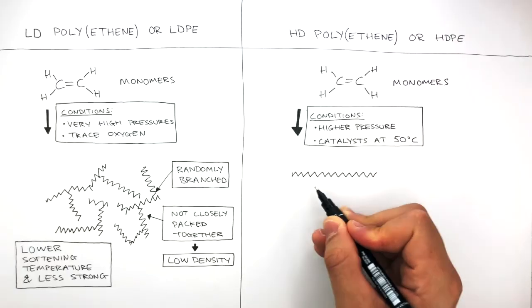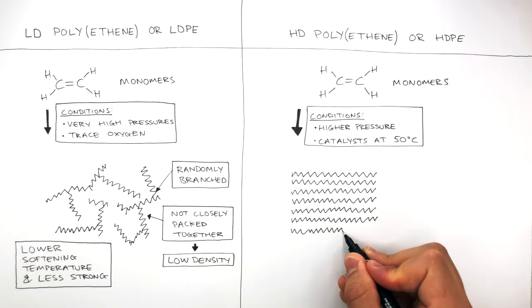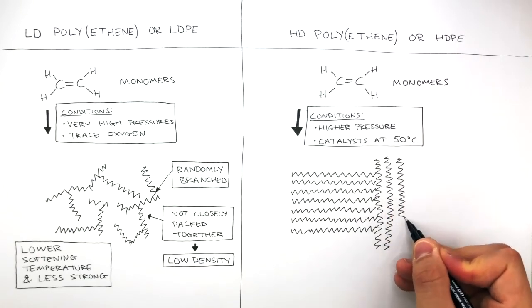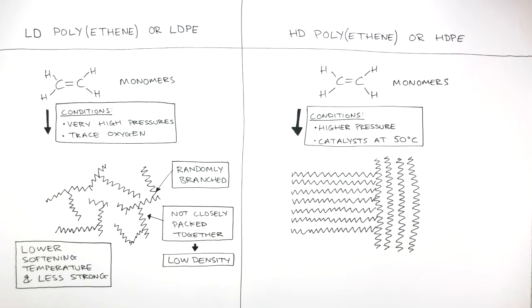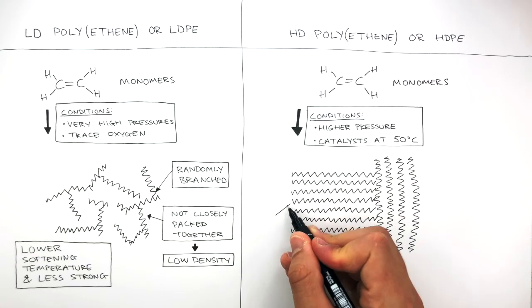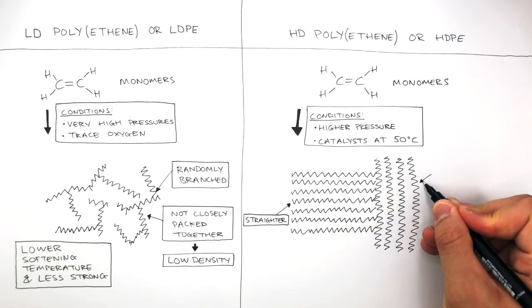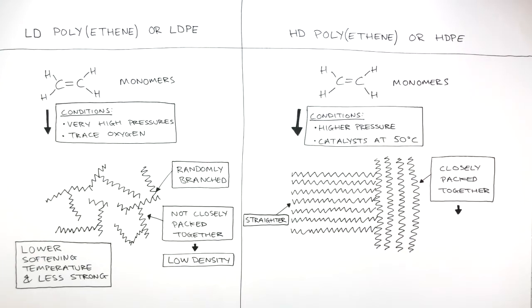This diagram of the high-density polyethene shows how the polymer chains are straighter and they're packed closely together. So we can see the polymer chains are straighter and closely packed together, which results in a higher density, which is why high-density polyethenes have their name, because of their higher density. And not only this, they have a higher softening temperature and are stronger compared to low-density polyethenes.